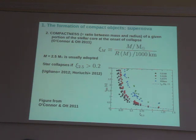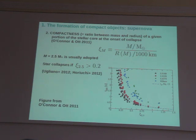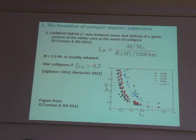Based on this result, O'Connor and Ott proposed to use not the carbon-oxygen core mass but this compactness Xi parameter as a reference value to decide whether a supernova will occur — leaving a neutron star — or the star will collapse directly to a black hole. Based on several astrophysical arguments, Xi larger than 0.2 is a reasonable and empirical threshold to expect the formation of a black hole by direct collapse.